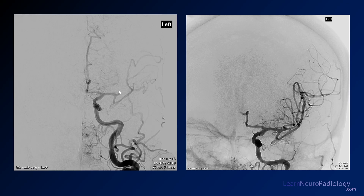These are some post-thrombectomy images where you can see they've actually gone out and recanalized that vessel. So you see that has been treated, and there's good blood flow to these downstream branches.